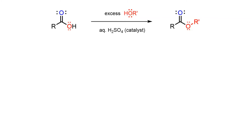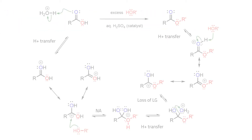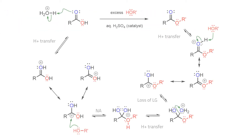The Fischer esterification involves a carboxylic acid reacting with an alcohol in the presence of an acid catalyst to give an ester. The mechanism for this transformation involves acid activation of the carbonyl, a nucleophilic attack to generate a tetrahedral intermediate, proton transfer, and loss of a molecule of water to deliver the ester product.